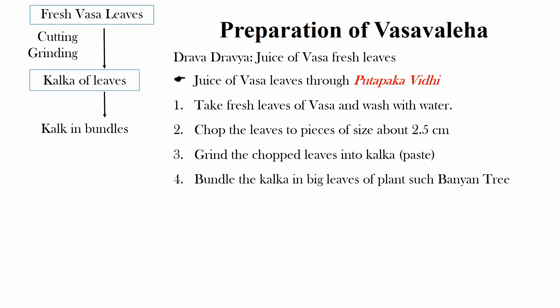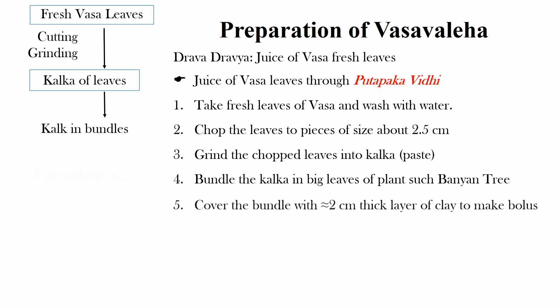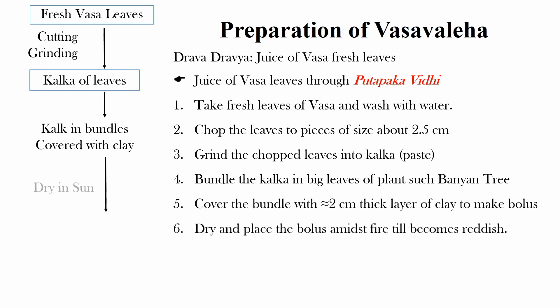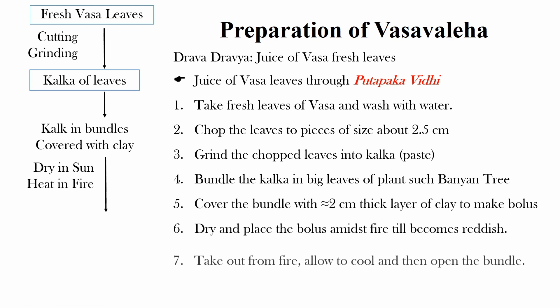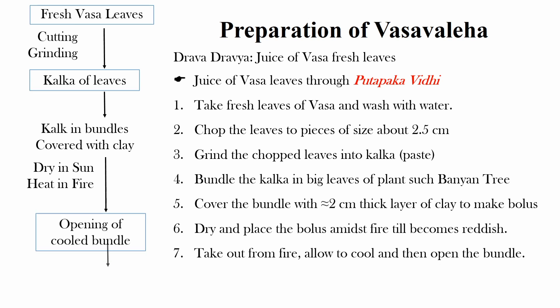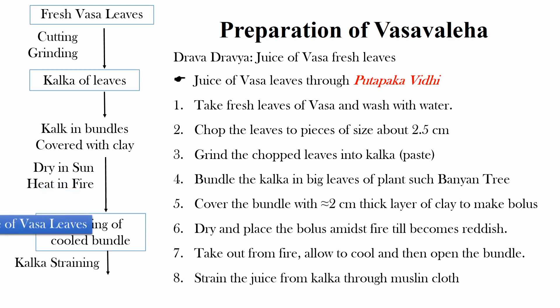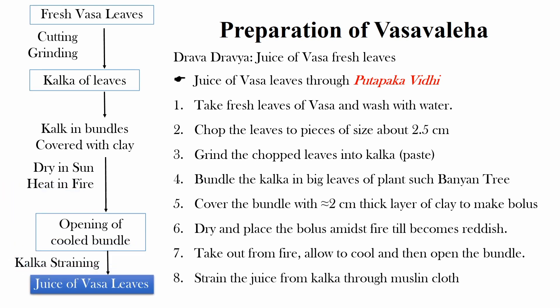Bundle the Kalka in big leaves of a plant such as banyan tree. Cover the bundle with about 2 cm thick layer of clay to make a bolus. Dry the bolus in sun and then put it in fire till it becomes reddish. Now take it out from the fire, allow to cool, then open the bundle. Strain the juice from the Kalka through muslin cloth to obtain juice of Vasa leaf.